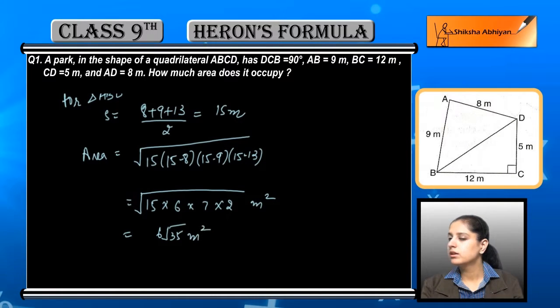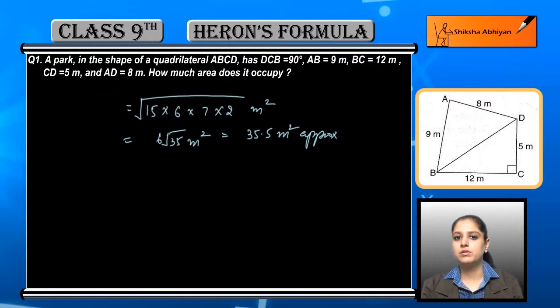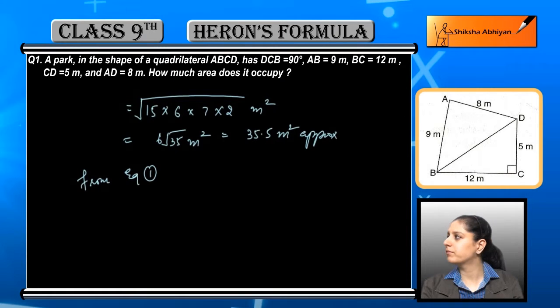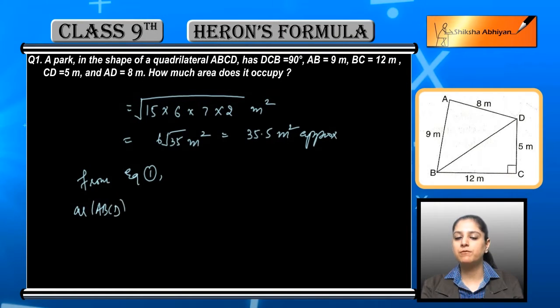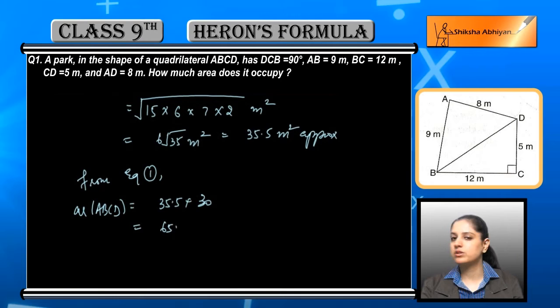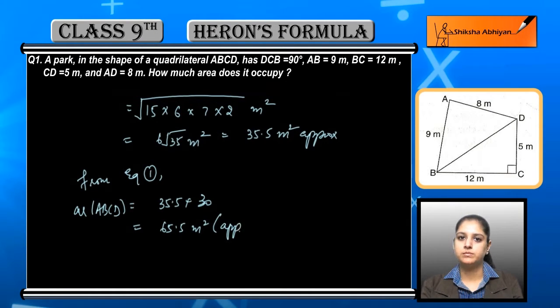Now if we find the area of the whole quadrilateral ABCD by adding both the areas that we have got. The second area is approximately 35.5 square meters. So if we add the area of the first triangle, that is 30, we will get 65.5 square meters as the approximate area of the quadrilateral ABCD.